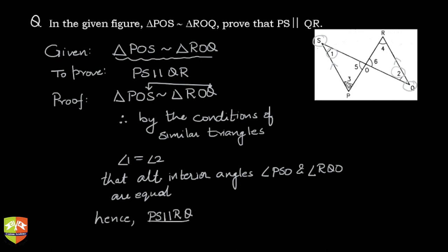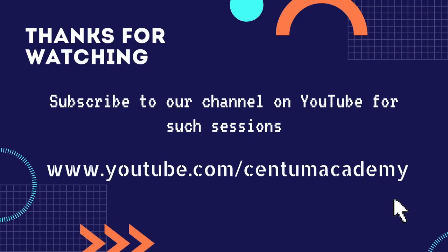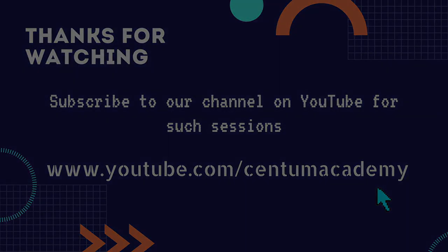You could have done this by proving the other two pairs of angles equal. Angle 3 is also equal to angle 4, and this can also be used to prove that PS is parallel to QR. I hope you understand how to solve such questions.